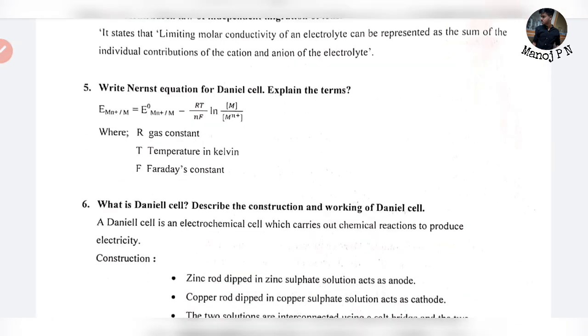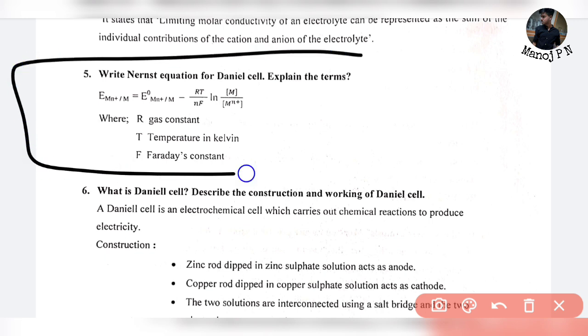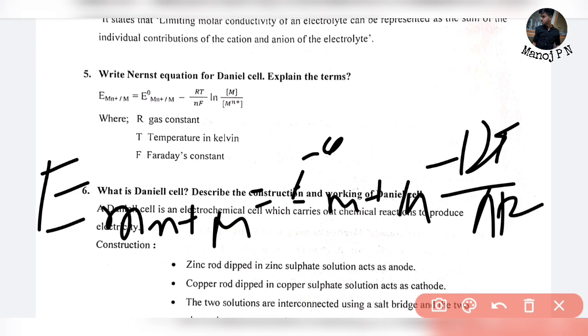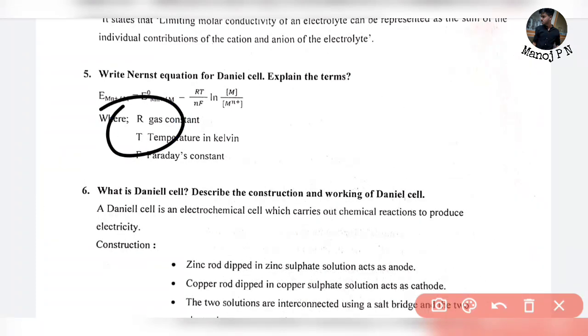Write the Nernst equation and explain the terms. Most important and repeated question. E_cell = E°_cell - (RT/nF) ln([M^n+]/[M]). Where R is gas constant, T is temperature in Kelvin, and F is Faraday's constant.